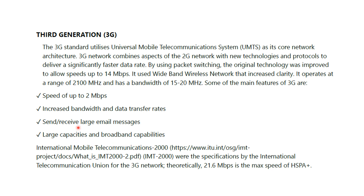The IMT specifications by the International Telecommunication Union for 3G networks were providing up to 21.6 Mbps.